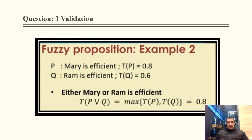For cross-validation: M is Mary's efficiency, RAM is efficient — either Mary or RAM is efficient. This is the same question with names changed. Maximum of 0.8 and 0.6 is 0.8. Note: if the question said 'Mary AND RAM,' it would be intersection and the answer would be 0.6, but since it is a union, we take the maximum.